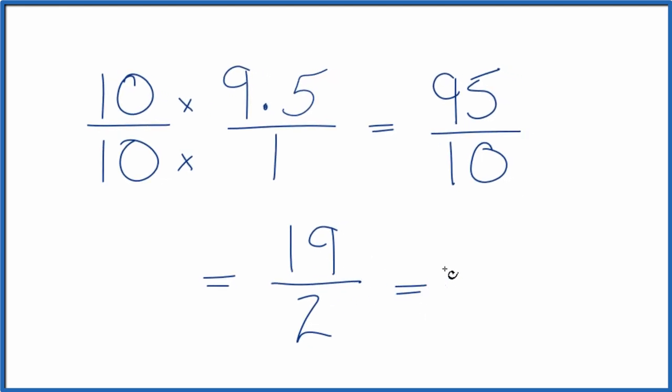2 goes into 19, 2 times 9 is 18 with 1 left over. And we just bring the 2 across. So 9 and 1/2 would be another answer for this. These are both equivalent. That's it. This is Dr. B converting 9.5 to a fraction.